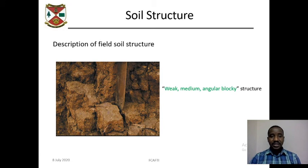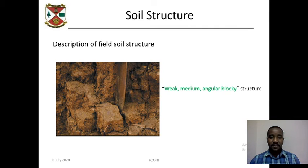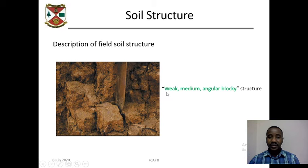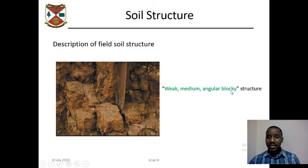Let us look at the descriptions of field soil structure — how can we describe these structures in the field? This is an example: this structure is weak, medium, angular blocky structure. 'Weak' stands for the grade of the soil structure, 'medium' stands for the size of the structure, and 'angular blocky' stands for the type of the structure.